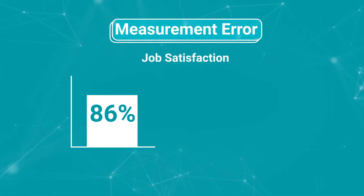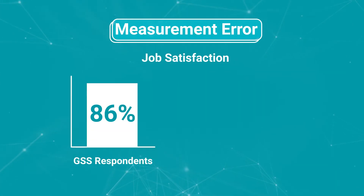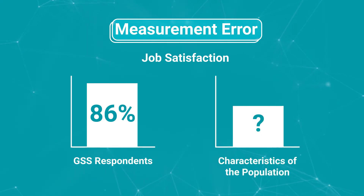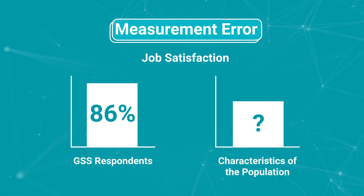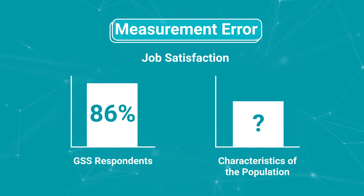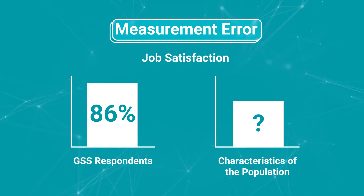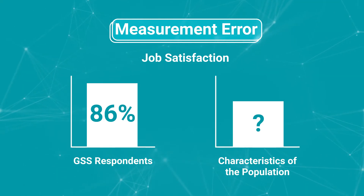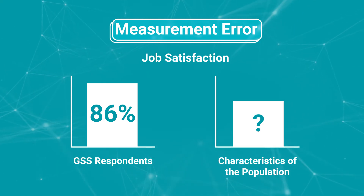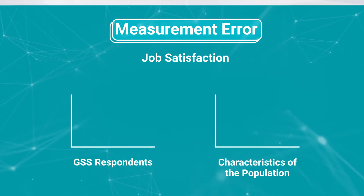Finally, measurement error is when there are differences in the estimates derived from a survey and the characteristics of the population because of inaccurate answers. This sometimes happens due to the mode of data collection or other reasons like the wording of a question.